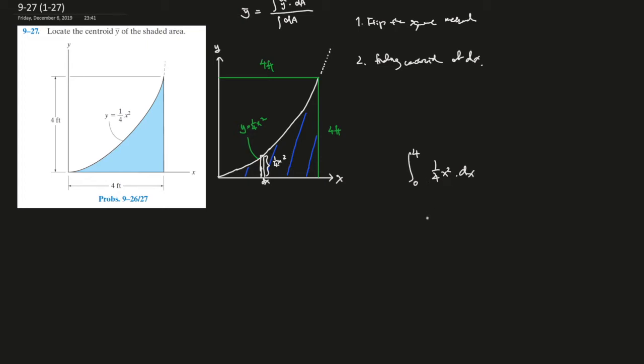So solve for this, move out the 1/4 over here for 0 x to the power of 2 dx, x to the power of 3 over 3, from 4 to 0, times 1/4. This whole thing should give you 16 over 3, 16/3 feet squared.